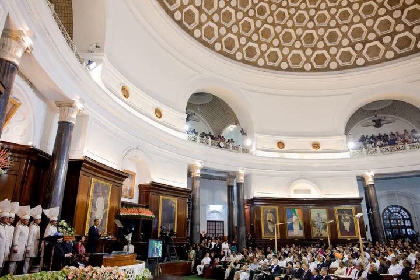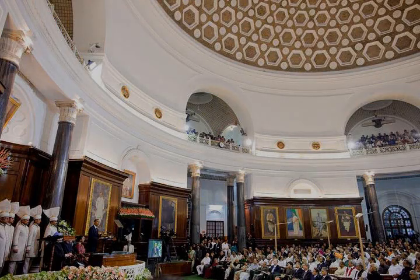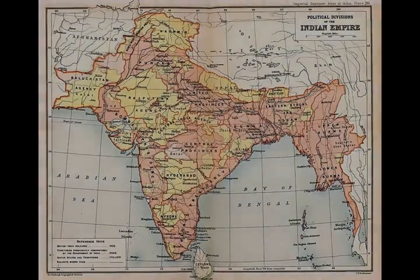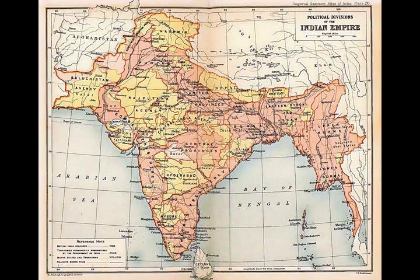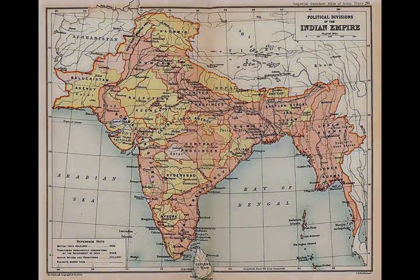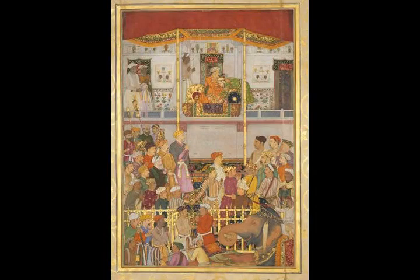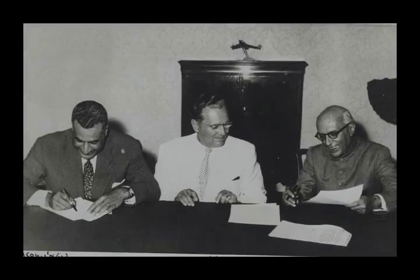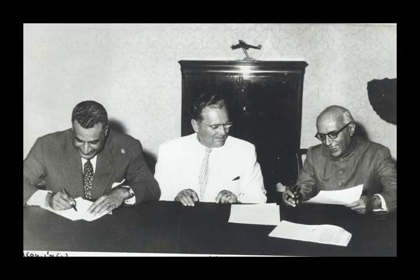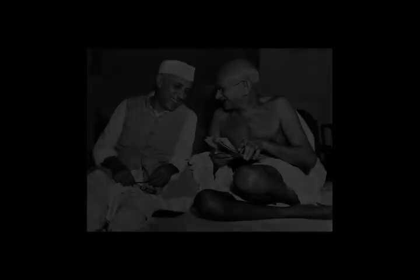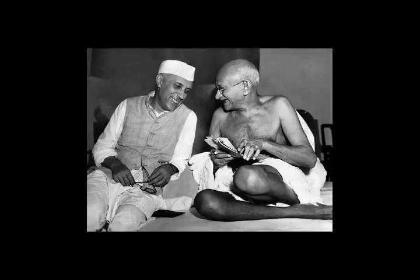India accounts for the bulk of the Indian subcontinent, lying atop the Indian tectonic plate, a part of the Indo-Australian plate. India's defining geological processes began 75 million years ago when the Indian plate, then part of the southern supercontinent Gondwana, began the northeastward drift caused by seafloor spreading to its southwest. The vast Tethian oceanic crust to its northeast began to subduct under the Eurasian plate. These dual processes, driven by convection in the earth's mantle, both created the Indian Ocean and caused the Indian continental crust eventually to underthrust Eurasia and uplift the Himalayas.